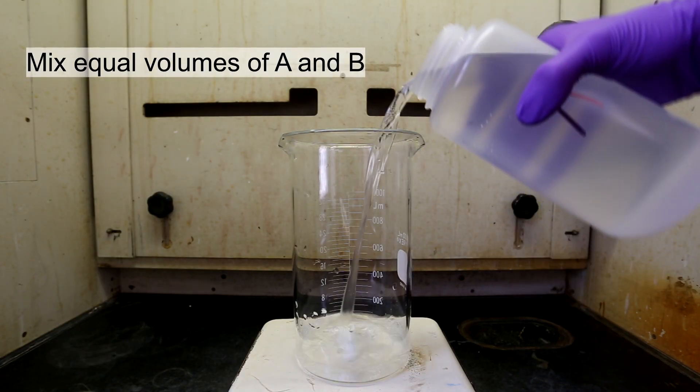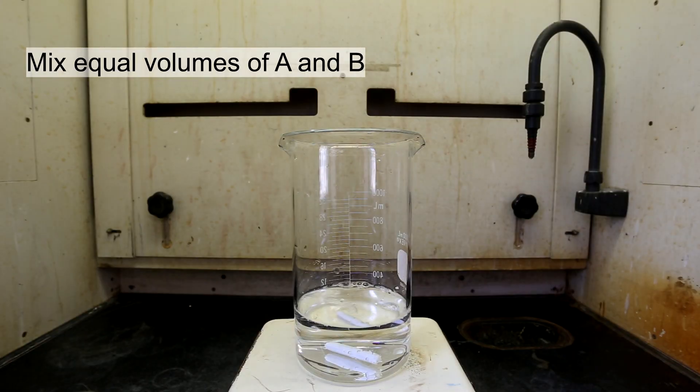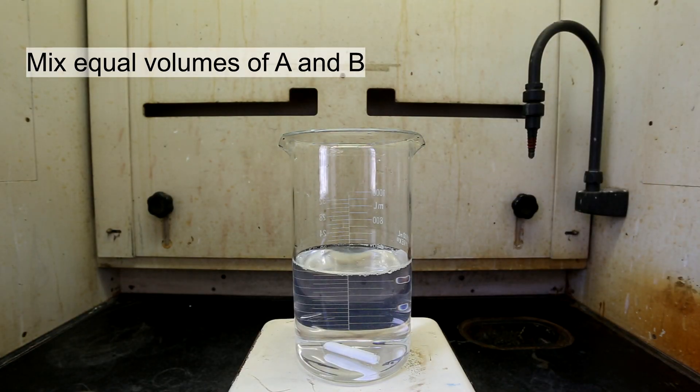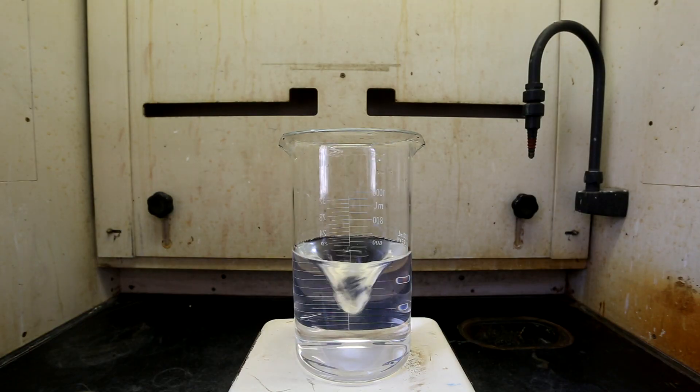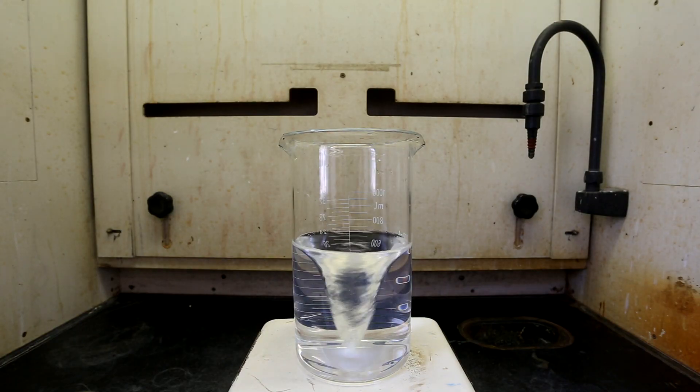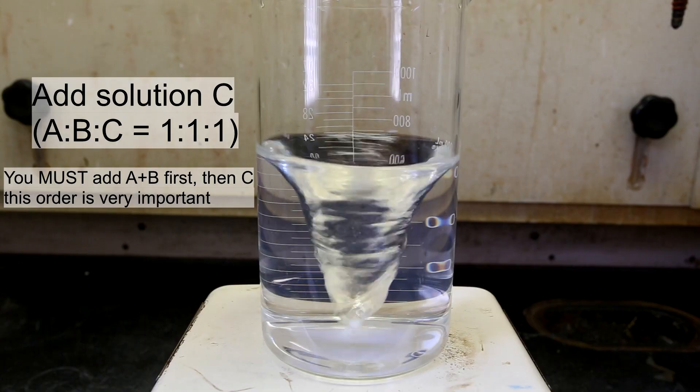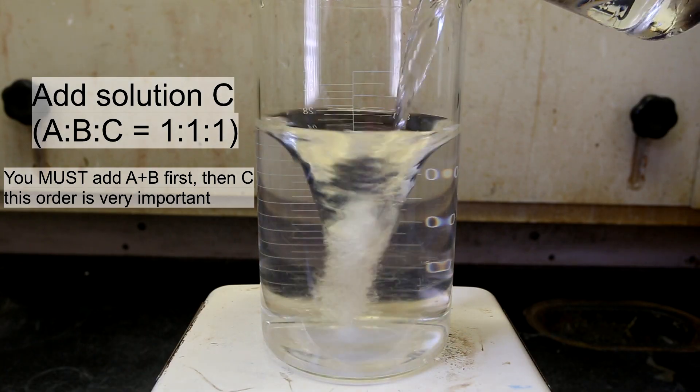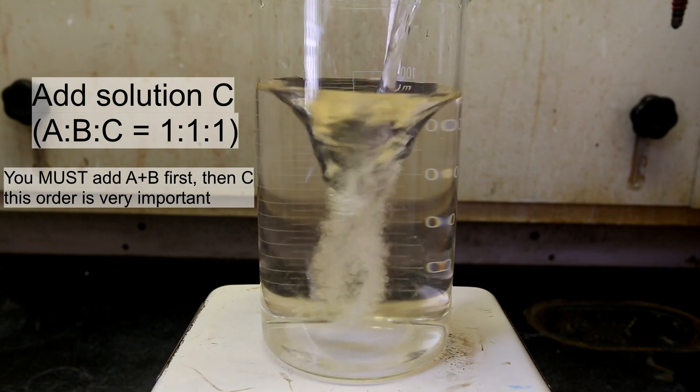First, add equal amounts of solution A and solution B to a beaker. In my case, I opted to use 300 milliliters of each. The solution must be stirred very strongly so that a large vortex appears. Next, 300 milliliters of solution C was added to the mixture. The amounts of each solution added must all be equal.